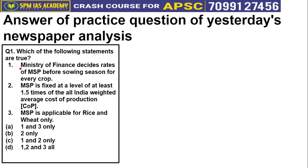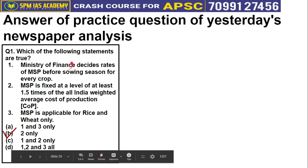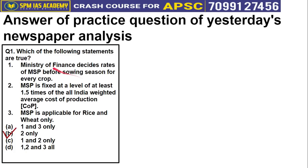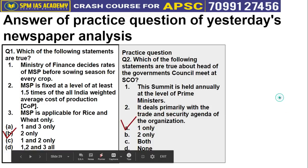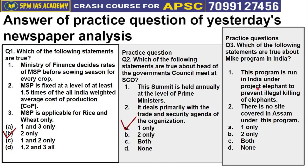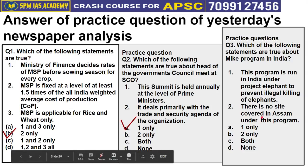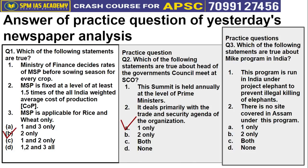For yesterday's practice question about MSP, the correct answer is Option 2 — the first statement is wrong because it is the Cabinet Committee on Economic Affairs, not the Ministry of Finance, that decides MSP. The second statement that MSP is applicable only on rice and wheat is also wrong — it is applicable on about 26 food crops. For the SCO question, the summit is held annually at the Prime Minister level — correct. It deals primarily with trade and security agenda — this is wrong, it deals with trade and economic agenda. So the correct answer is Option A, one only. For the MIC program question: it runs under Project Elephant — correct. There is no site in Assam — wrong, there are two sites: Ripu Chirang Elephant Reserve and Dehing Patkai Elephant Reserve. Correct answer: Option A, one only.